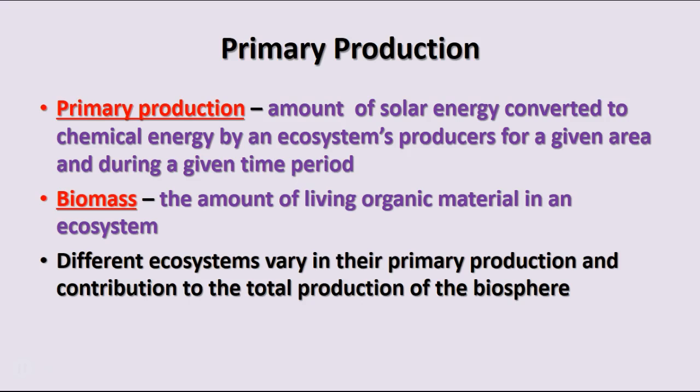The amount of living organic material in an ecosystem is called the biomass. Different ecosystems vary in primary production and their contribution to the total production of the biosphere depending on various factors, including time of year, weather, and other conditions that might influence production. Primary production can vary from year to year and from season to season.